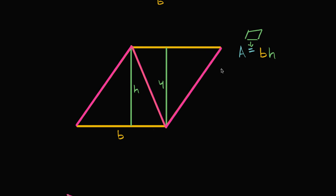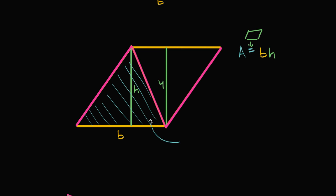That's going to be the area of the entire parallelogram. So what would be the area of our original triangle? We already saw that the area of the parallelogram is twice the area of our original triangle. So our original triangle is just going to have half the area — one-half the area of the parallelogram — which is one-half base times height.